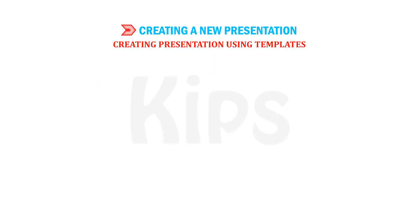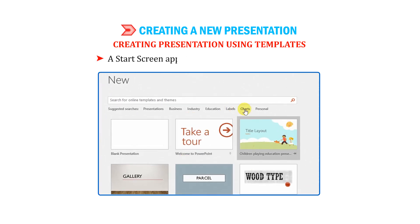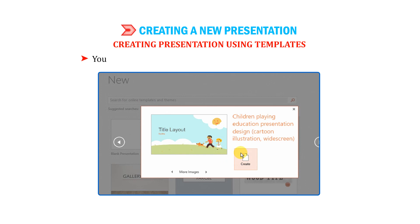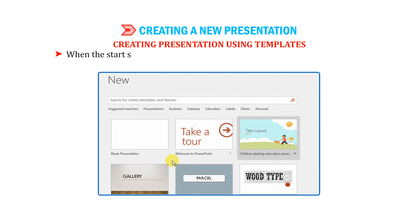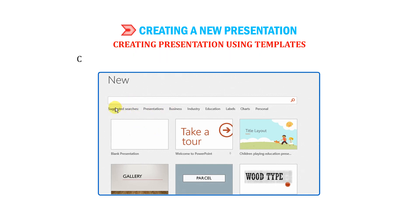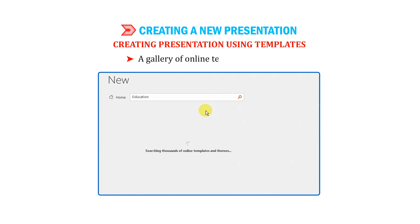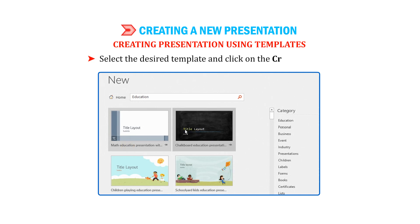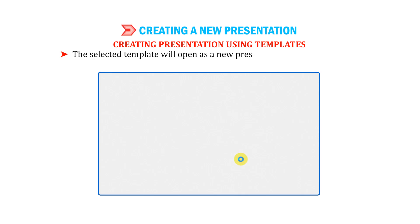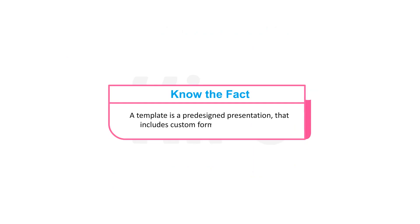Now let us learn how to create a presentation using templates. Start PowerPoint 2016. A start screen appears displaying the list of templates. Double click on the template thumbnail that you wish to use, or click the thumbnail to preview the template first and then click on the Create button. You can also create a presentation based on online templates. When the start screen appears, enter a term related to the template you are looking for in the search box. Click on the search button, or click one of the suggested searches below the search box. Here we have selected the Education category. A gallery of online templates will open. Select the desired template and click on the Create button. Here we have selected the Children Playing Education Presentation Design Template. The selected template will open as a new presentation containing a group of slides with different backgrounds.